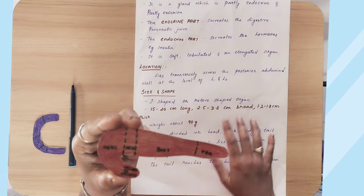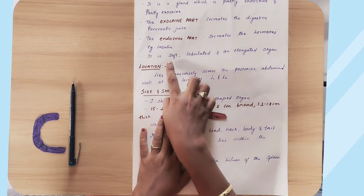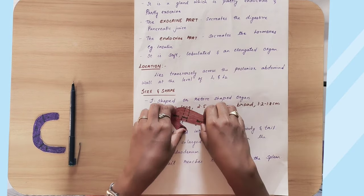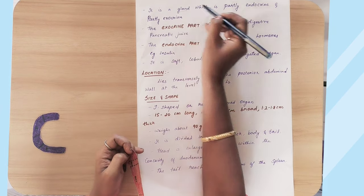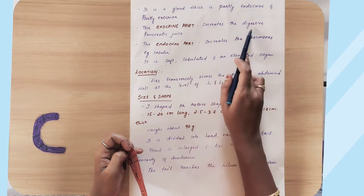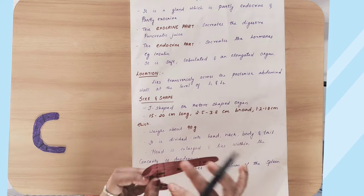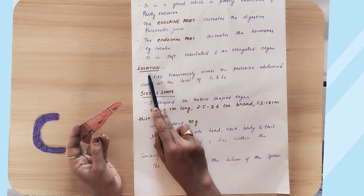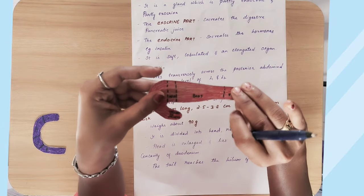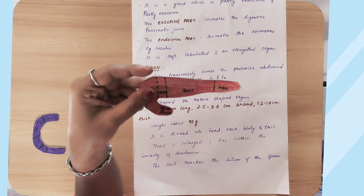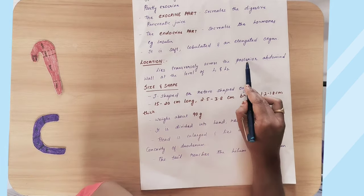The endocrine part secretes hormones such as insulin. The pancreas is soft, lobulated, and elongated. Regarding location, it lies transversely at the posterior abdominal wall at the level of L1 and L2 lumbar vertebrae.